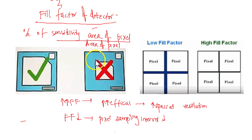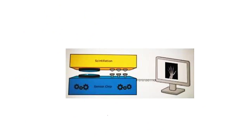When the pixel size decreases — that is, smaller and smaller — the resolution will increase. Another important detector is the charge coupled device detector, also called the CCD detector.